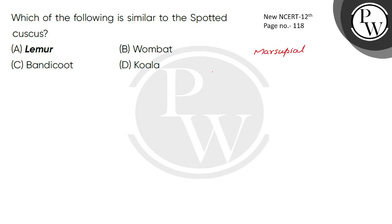You have two types of marsupial: placental marsupial and Australian marsupial. Now your spotted cuscus comes from the Australian marsupial group.